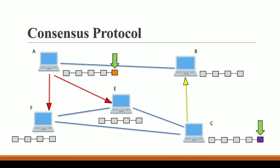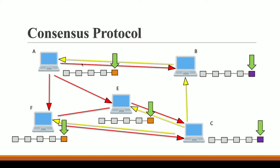Once this transfer of information is done, F and E will verify and validate A's block and add it to their blockchain. In the same way, B will also verify and validate C's block and add it to its blockchain. The problem arises when B and C transfer information that they have a purple block, wanting A, E, and F to add it. And A, E, and F also transfer that they have an orange block, wanting B and C to add it.